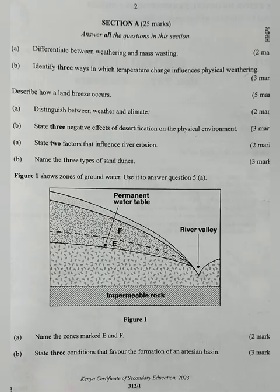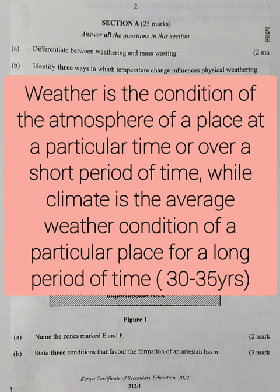Question 3A: distinguish between weather and climate. This requires the word 'while'. Weather is the condition of the atmosphere of a place at a particular time or over a short period of time, while climate is the average weather condition of a particular place for a long period of time.